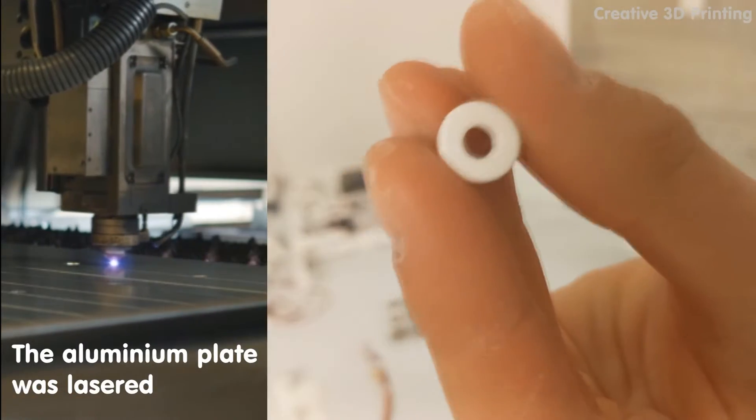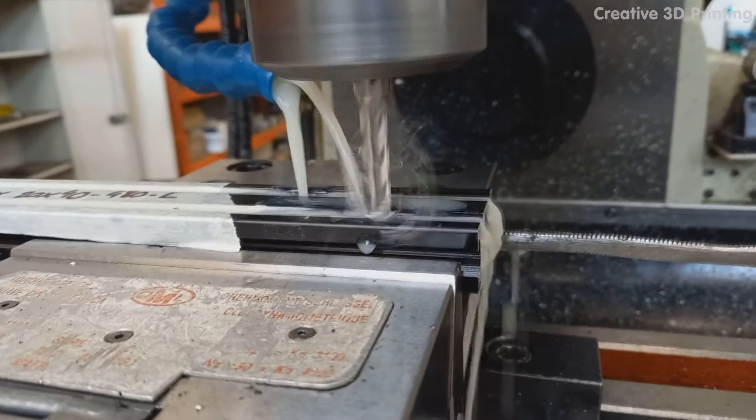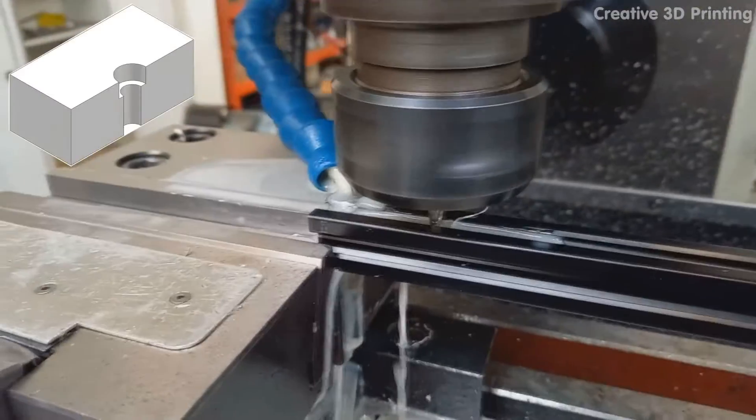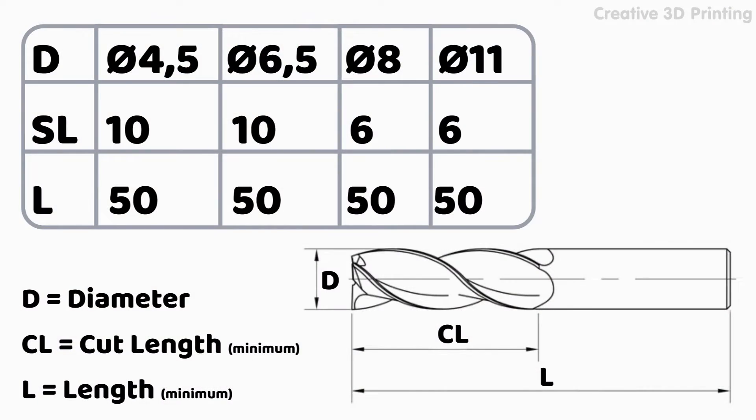The aluminum plate has M4 holes and countersink holes for mounting the power supply. I used a conventional milling machine to cut the holes in the aluminum profiles and used four different HSS cutters for this.